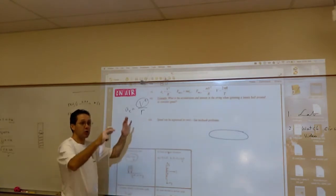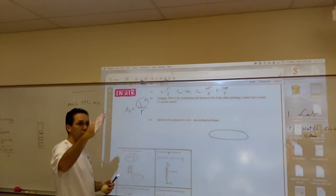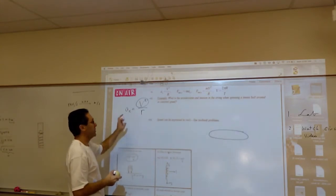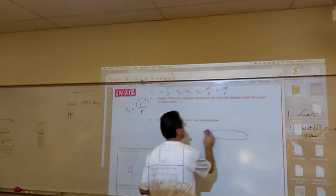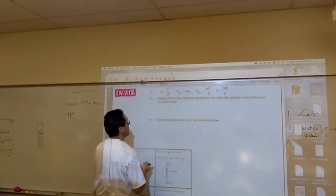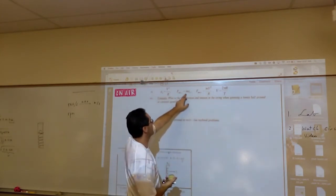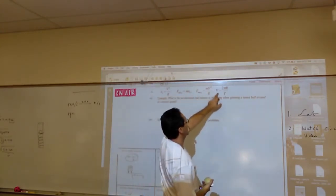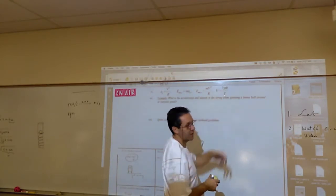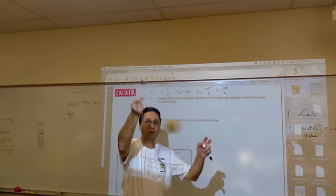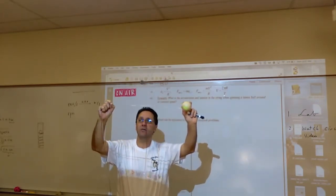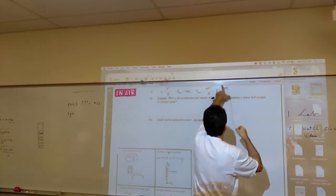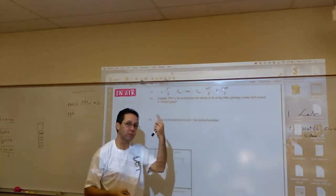What happens if you make R large? If you make R large, the change in direction happens slowly. So there is that inverse relationship. Now, where does F_net centripetal come from? This is Newton's second law: F_net equals MA. Combining these gives you F_net centripetal equals MV squared over R. And speed equals distance over time, so the speed of the tennis ball is the circumference divided by the time it takes to do one revolution.